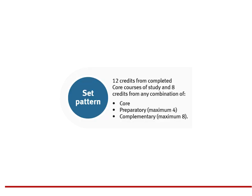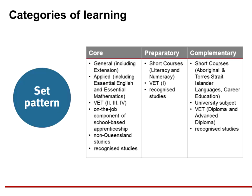On the brochure, this is the summary graphic for the set pattern. Courses of study are classified into three categories of learning: Core, Preparatory and Complementary. Examples of which category courses are allocated to are shown here. Please note that extension subjects are now in the core category of learning. The Preparatory category of learning has a maximum of four credits that can accrue to a QCE. The Complementary category of learning has a maximum of eight credits.